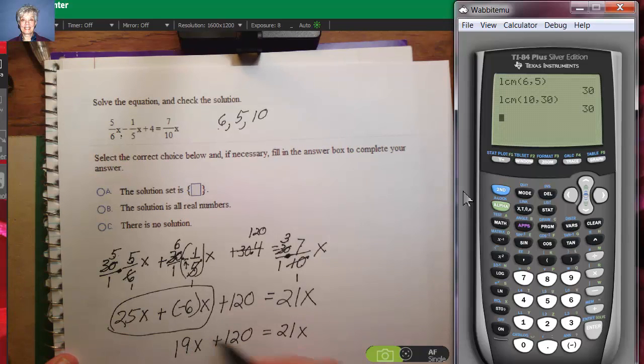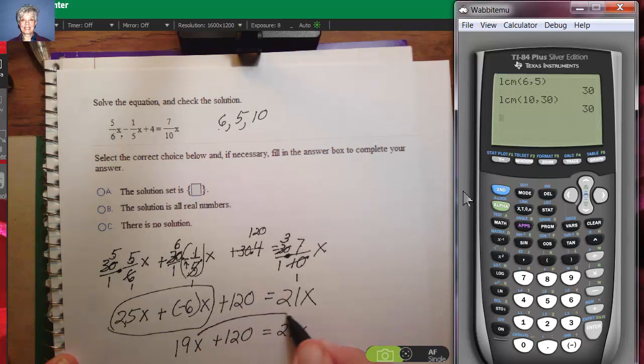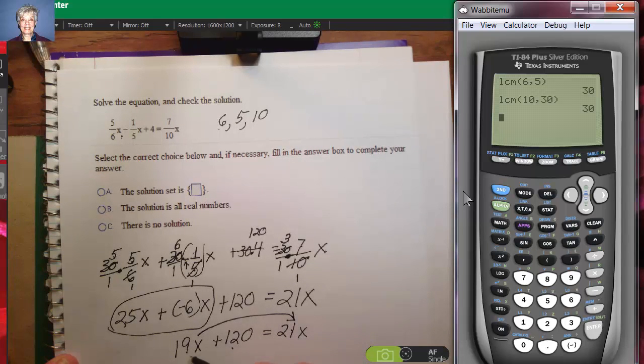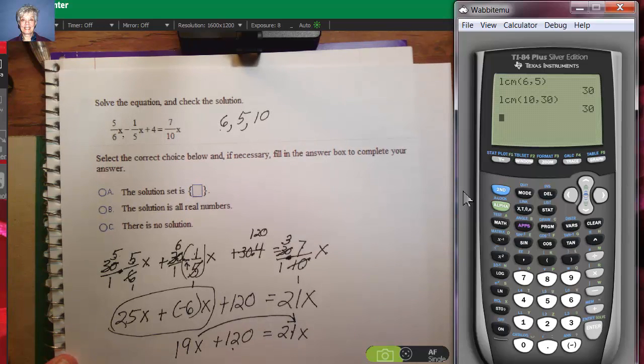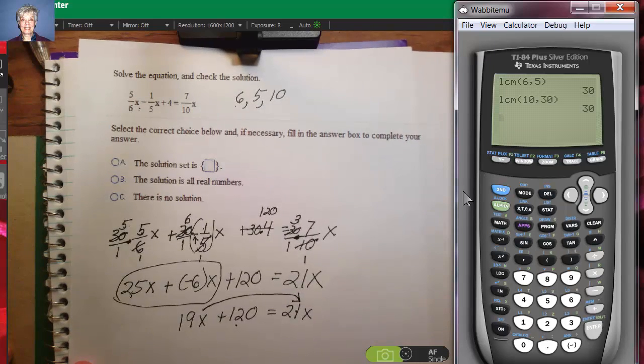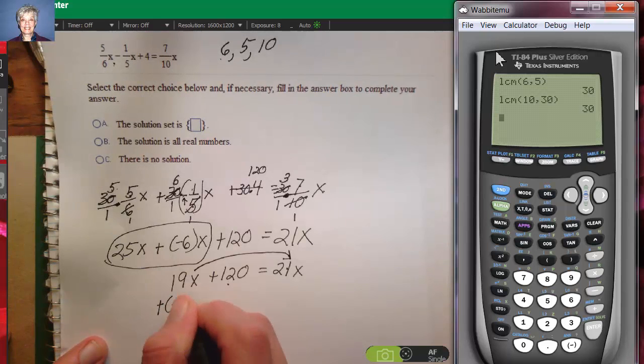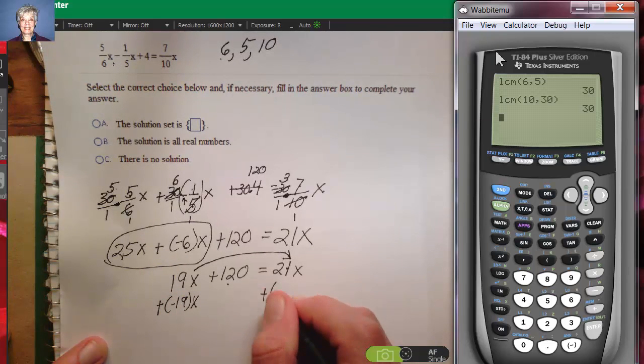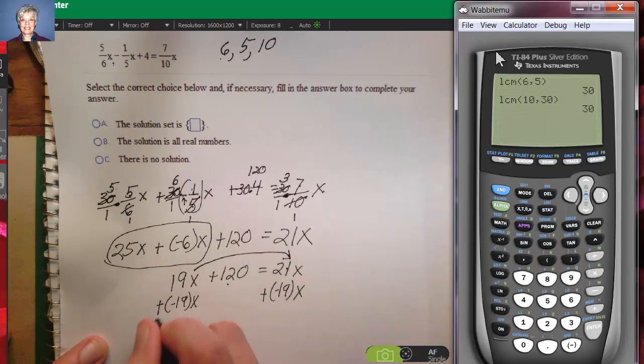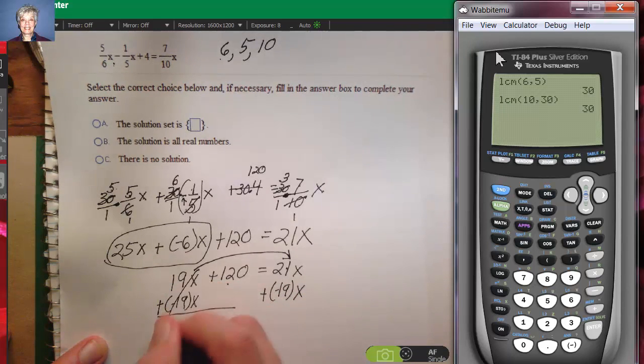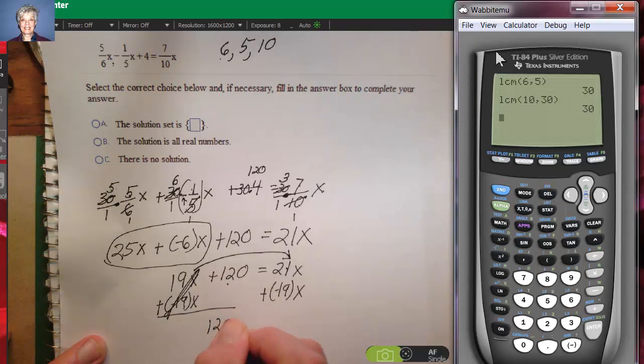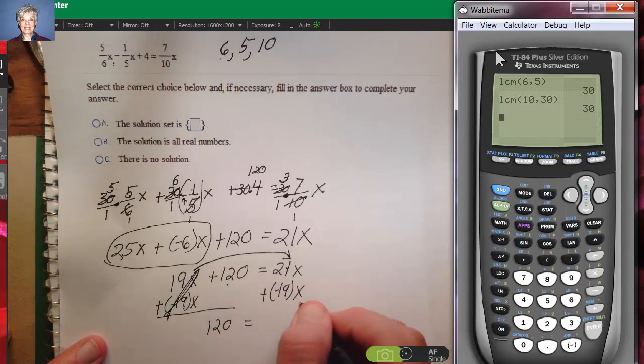I have a variable term, a constant term, a variable term. I'm going to move this variable term over here with this variable term, leaving the constant term by itself. I'm going to add negative 19x and I'm going to add negative 19x. 19x plus negative 19x is 0, leaving me with 120 on the left. And 21x minus 19x is 2x.